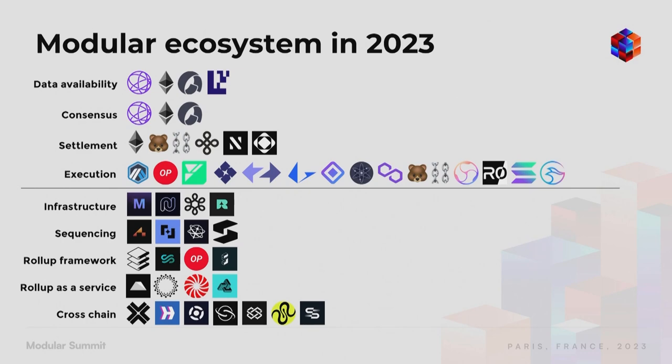The ultimate goal from an engineering perspective should be that deploying a decentralized application as a roll-up should be easier and more convenient than deploying a new smart contract. That's basically what we've seen in Web 2 — if you create a new web application, you don't use a shared hosting provider like WordPress. You deploy a new virtual machine in the cloud because that gives you more flexibility, more scale, and more choice.